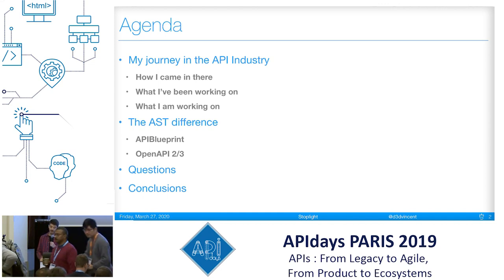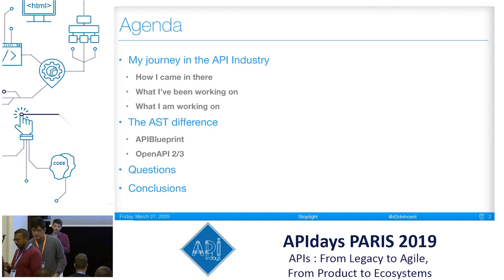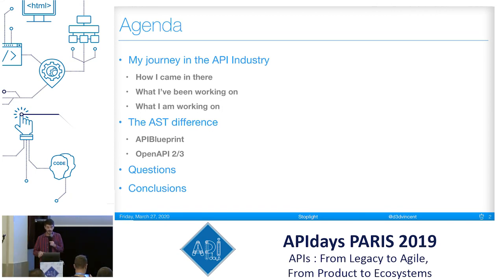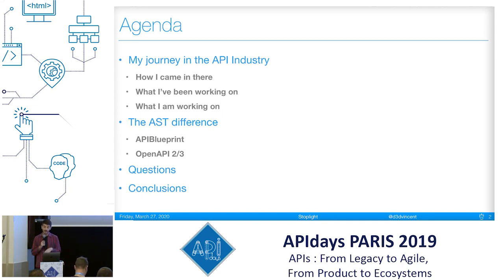The idea is I'm going to tell you a little bit about my journey in the API industry, how I came to work in it, what I've been working on, and what I am working on now. Then we're going to go into the meat — this AST problem that I think we have — and I'll give you two examples: API Blueprint first, and then OpenAPI 2 and 3. Then we'll take some questions and draw some conclusions. This is the agenda.